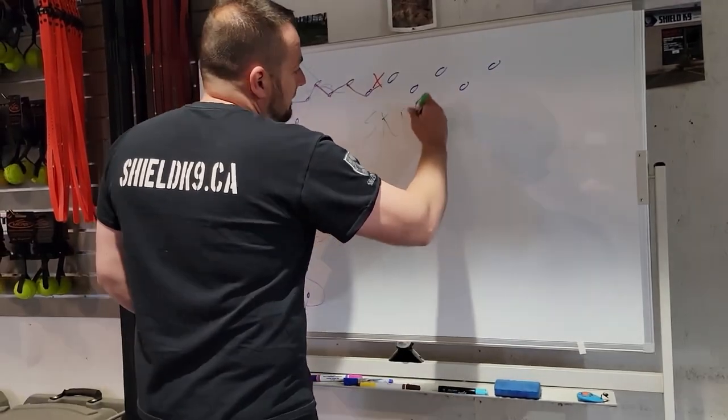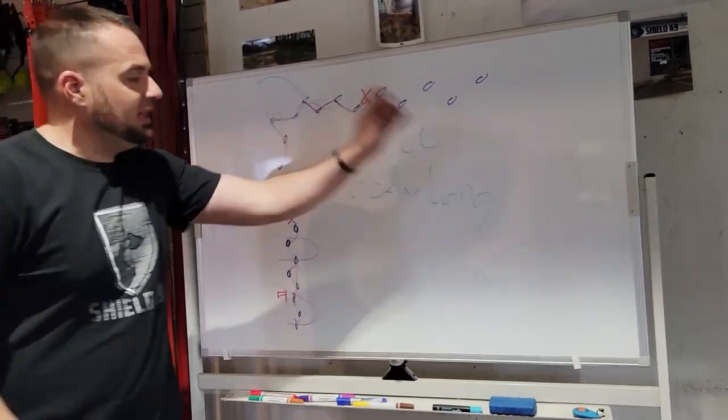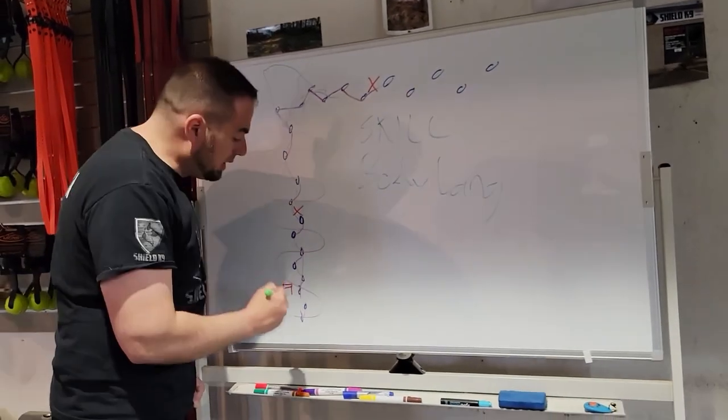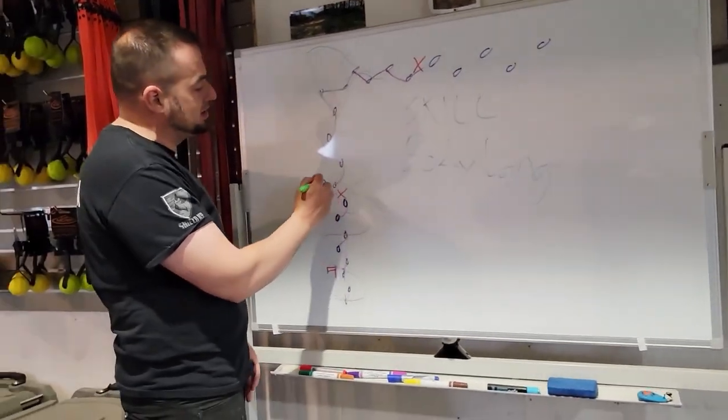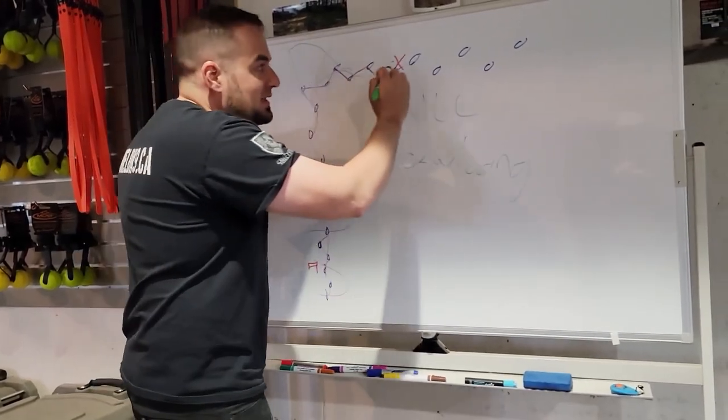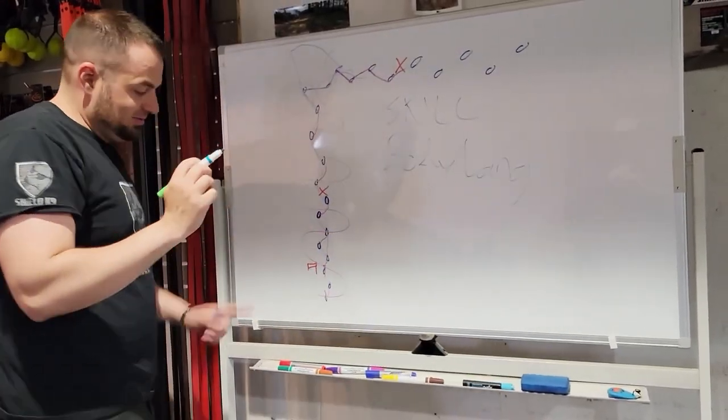The skill of the dog is important. The body language of the dog is super important. So we want to see a dog that's deep. We want to see a dog that's detailed, that adheres to this track as much as possible, that doesn't blow corners and that stays on the track.